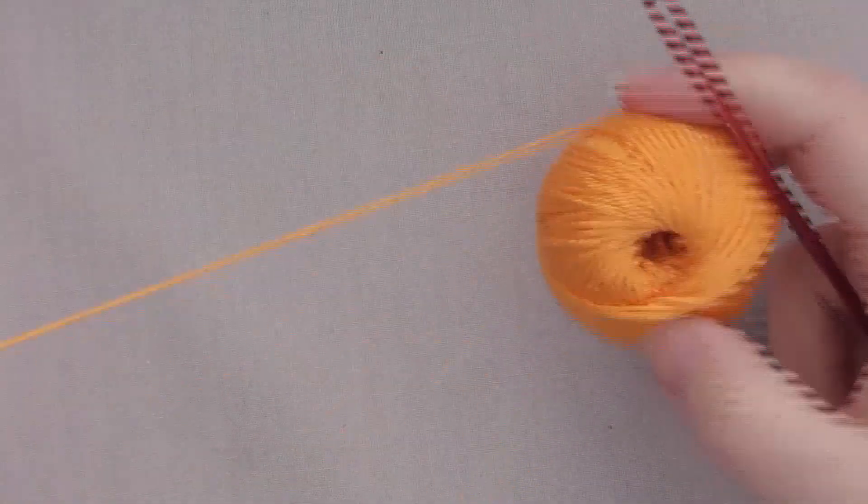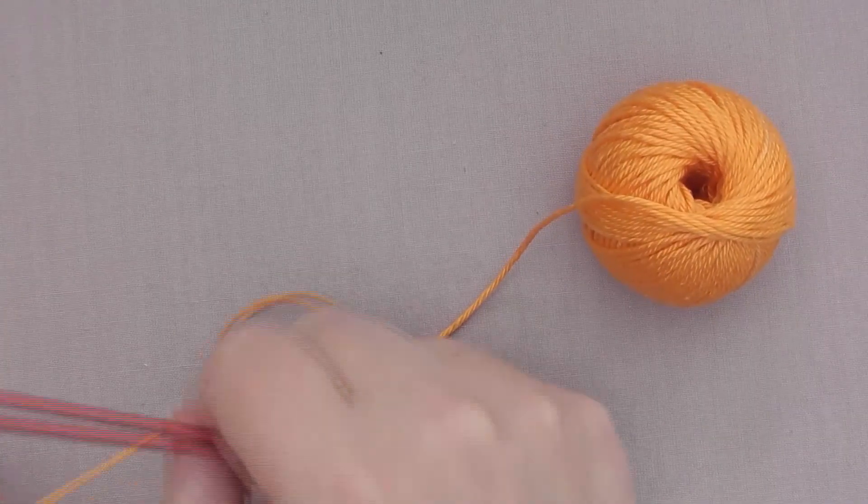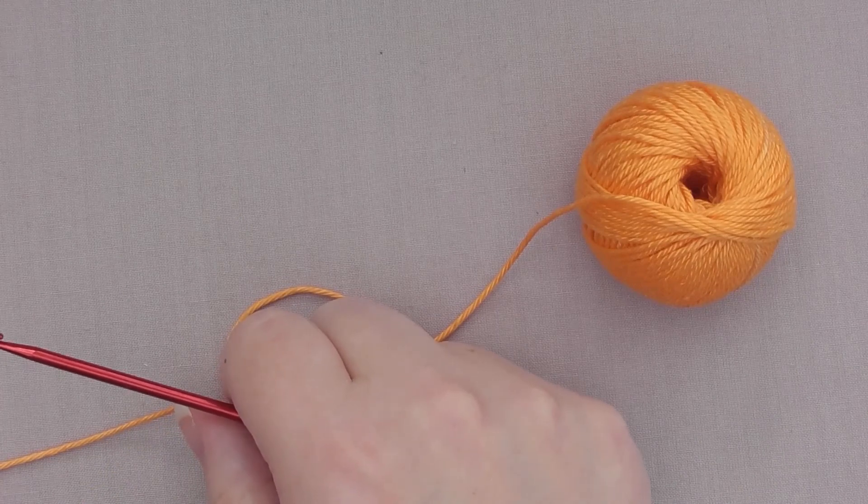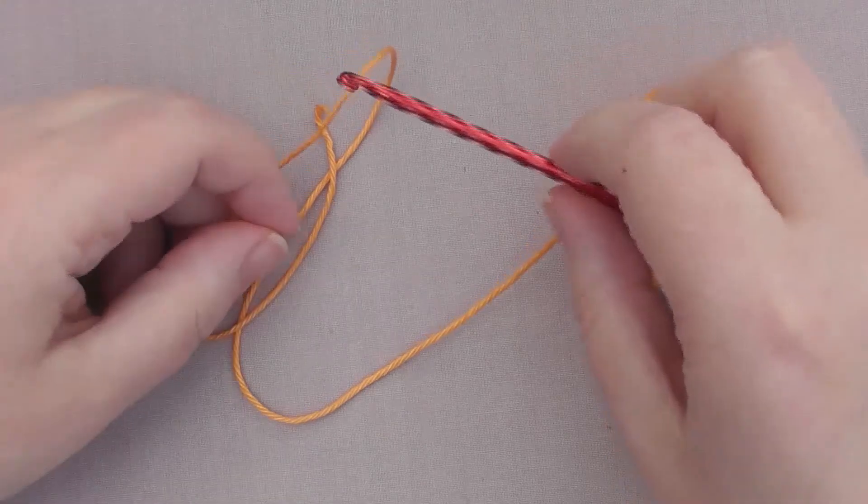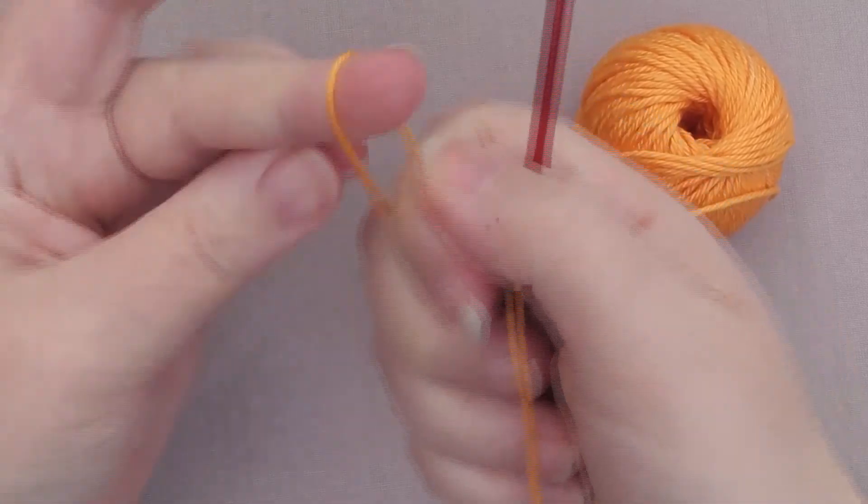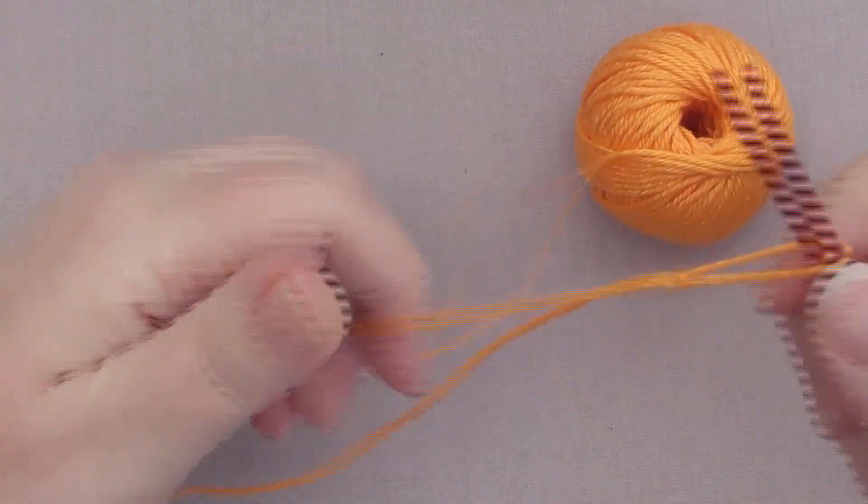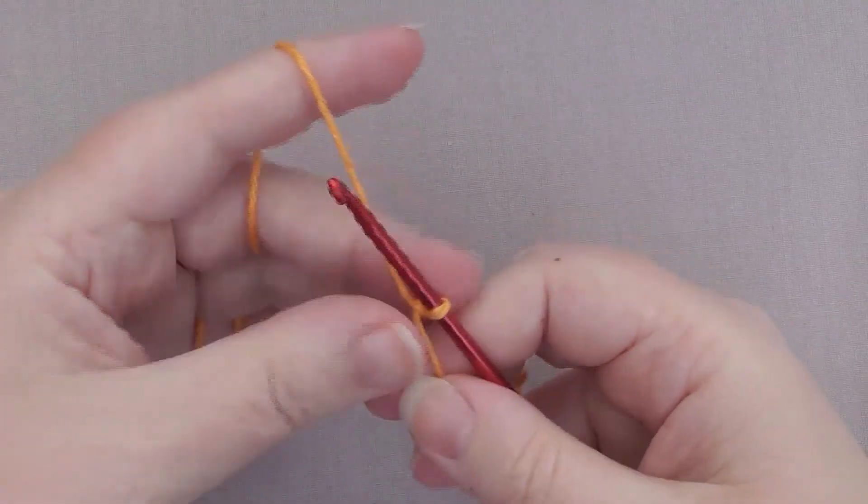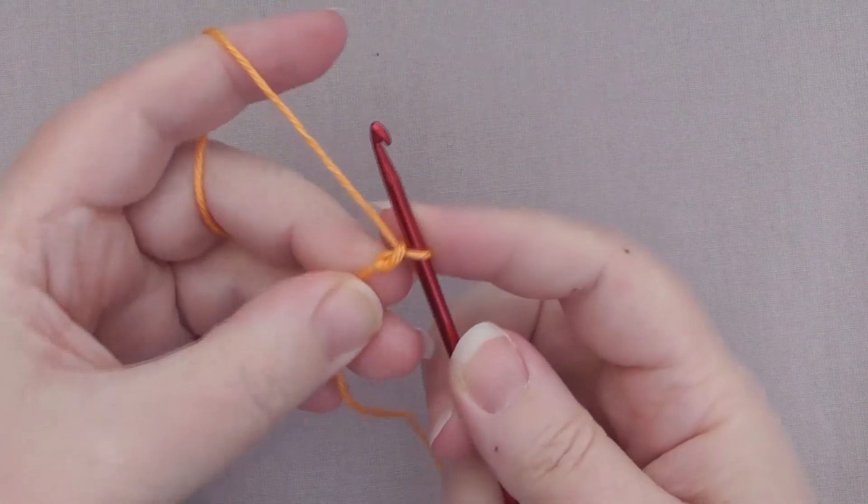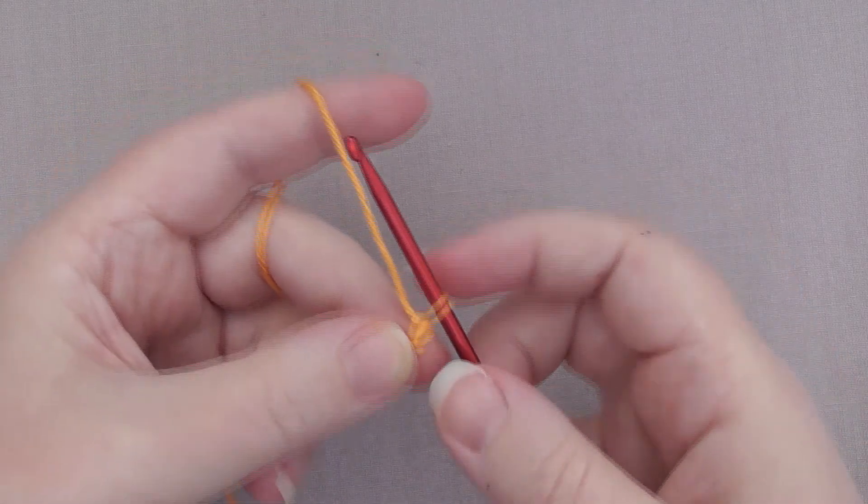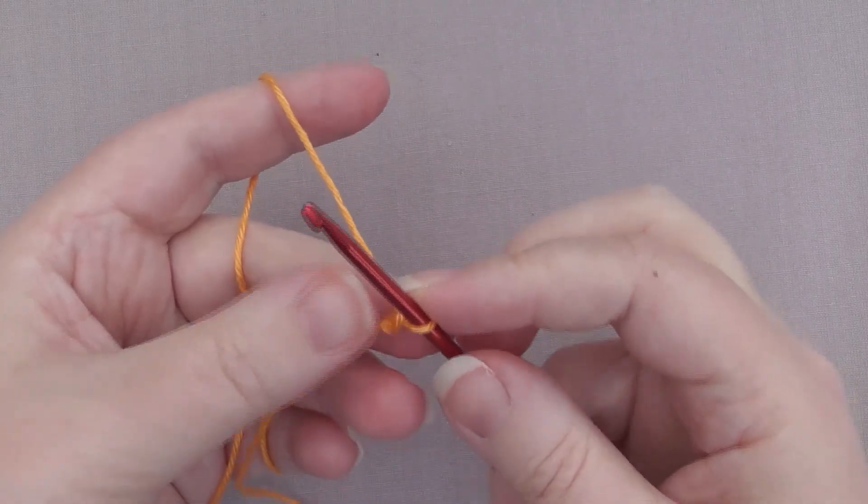So for this size, we're going to want to start with 17 stitches. So just make your slipknot, however you find easiest to make. Once you've got your slipknot, we're just going to yarn over and pull through, so that creates your one there and one here, so you've got two loops to chain, basically, and that's as far as we're going to go on a chain.